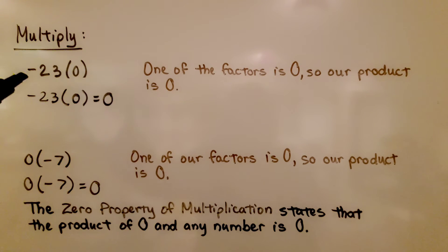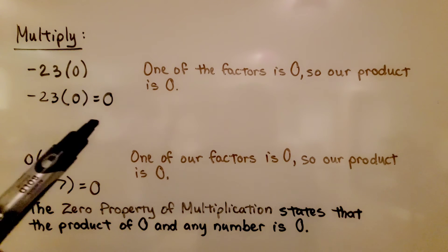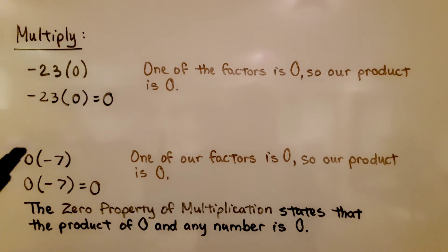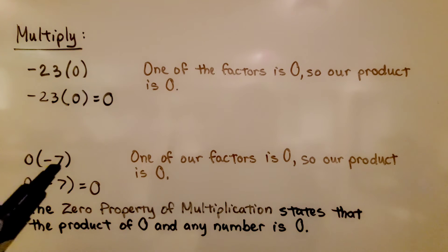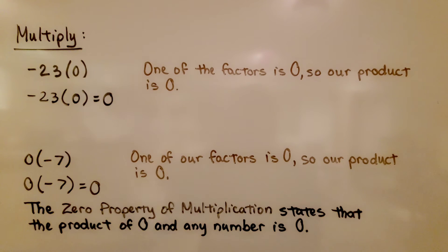We're multiplying negative 23 times zero. One of the factors is zero, so our product is zero. Here, we're multiplying zero times negative 7. One of our factors is zero, so our product is zero. It doesn't matter which factor is zero — the zero property of multiplication states that the product of zero and any number is zero.